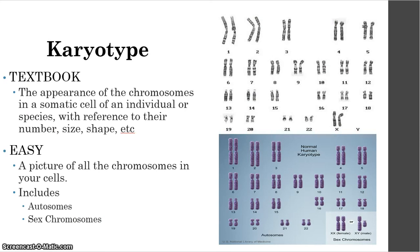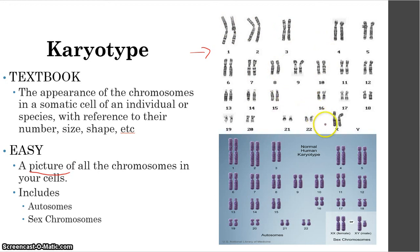The next vocabulary word we need to be familiar with is karyotype. The textbook definition is the appearance of the chromosomes in a somatic cell of an individual or species, with reference to their number, size, shape, and so on. The easiest way to put it is it's a picture of all the chromosomes in your cells. Here you can see all 46 chromosomes of a random human being's cell. They come in 23 pairs — you're getting one chromosome of each pair from the male and one from the female.